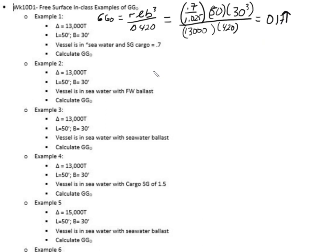So now let's do this one here. We're going to use that same formula. We're a vessel in seawater with freshwater ballast. Well, freshwater has a specific gravity of 1.0 and the seawater is still 1.025. And then all this other stuff is going to be the same, 50, 30 cubed, divided by 13,000, times 420. And when we do that, we get 0.24 feet up.